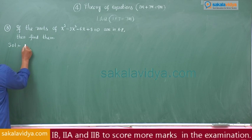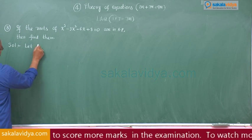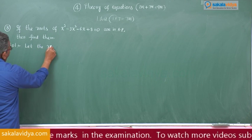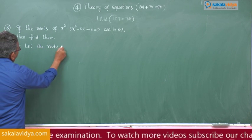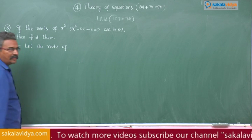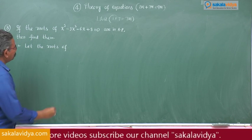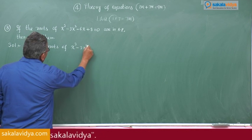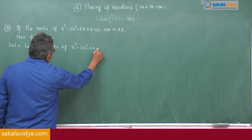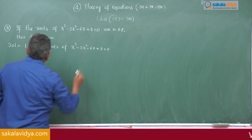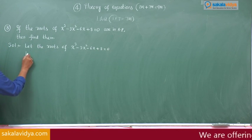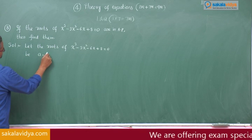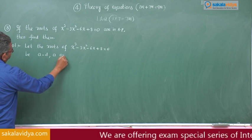Let the roots of x³ - 3x² - 6x + 8 = 0 be a - d, a, and a + d.